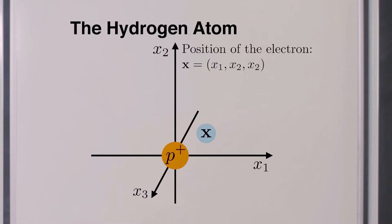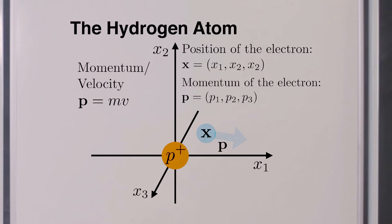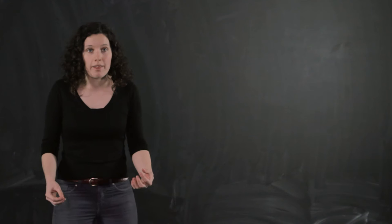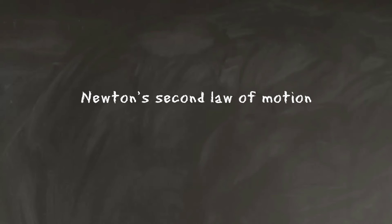The system is also characterized by its momentum p ∈ ℝ³ with components p1, p2, p3. If you have forgotten or never heard about the momentum of a particle, just recall that the momentum is equal to the mass times the velocity of the particle. But defining the state of the electron does not explain how it moves in space. To determine this evolution, we need to call on Newton's second law of motion.